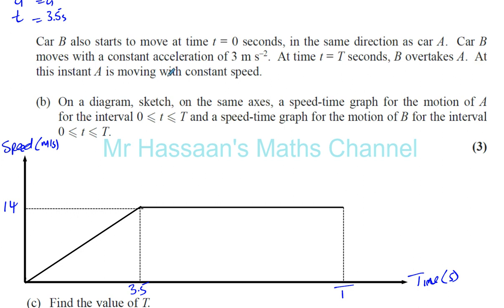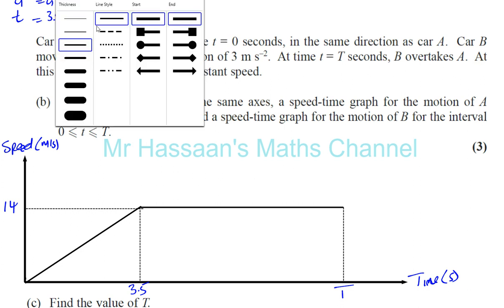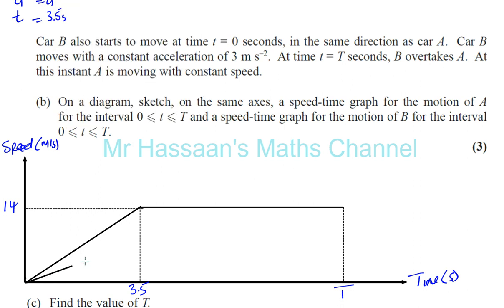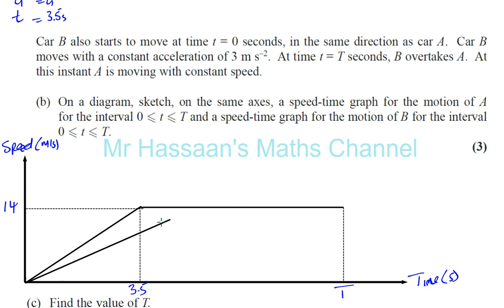For car B, it also starts to move at time equals 0 from rest in the same direction as A. Car B moves with constant acceleration of 3 meters per second squared, so the gradient is going to be shallower. At time T seconds, B overtakes A. At this instant, A is moving with constant speed. Now, they overtake each other — B overtakes A at T seconds — that means they've traveled the same distance.